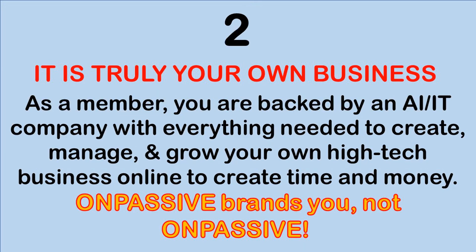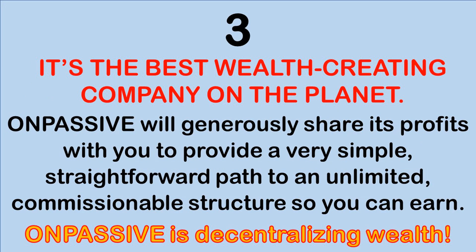Reason number two: this is truly your own business. As a member, you're backed by an AI and IT company — an artificial intelligence information technology company — that has everything needed to create, sustain, manage, and grow your own high-tech online business. That's going to create time and money for us. Referring back to CATMO: CATMO equals total freedom, and total freedom equals time and money to do what we want. Keep in mind, OnPassive brands you, the business owner — it does not brand OnPassive.